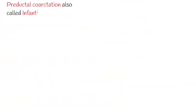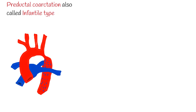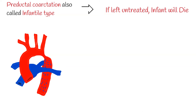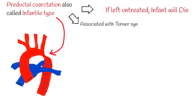Preductal coarctation is also called the infantile type. It is presented during infancy, and if left untreated, the patient will die during infancy. Preductal coarctation is severe narrowing of the aorta. It is associated with Turner syndrome and is usually associated with patent ductus arteriosus.